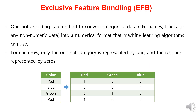Next, let's learn about Exclusive Feature Bundling, one of the features of the LightGBM model. Before explaining Exclusive Feature Bundling, let's look at one-hot encoding. One-hot encoding is a method that converts categorical data, such as names or labels, into a numerical format that machine learning algorithms can use. For each row, only the original category is represented by one, and the rest are represented by zeros.